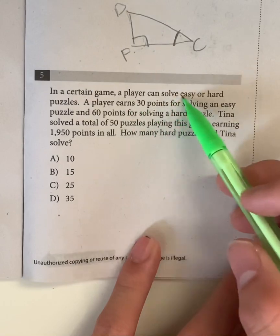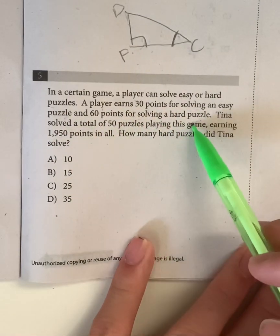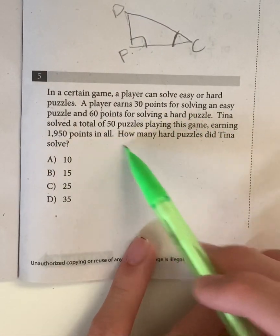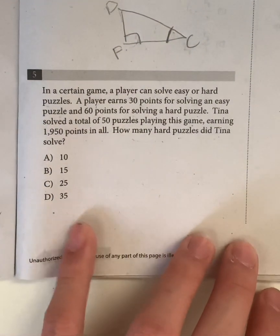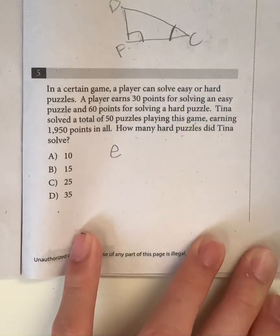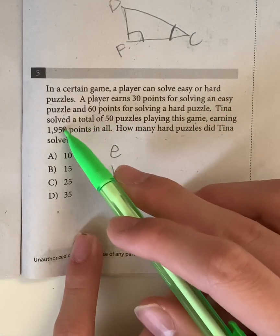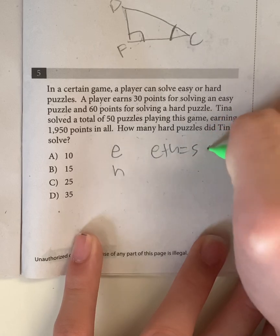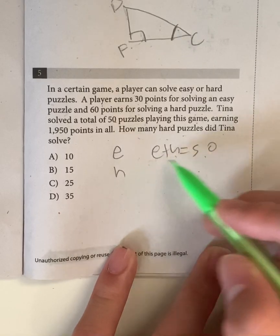So in a certain game, a player can either solve hard or easy puzzles. A player earns 30 points for solving an easy puzzle and 60 points for solving a hard puzzle. Tina solved a total of 50 puzzles playing the game, earning 1950 points in total. How many hard puzzles did Tina solve? So this is a word problem, and it requires us to write an equation. So she earns 30 points for an easy question, so I'll just say E represents the easy questions, and then 60 points for a hard question, so I'll call that H. Well, if she solved a total of 50 puzzles, that means E + H has to equal 50.